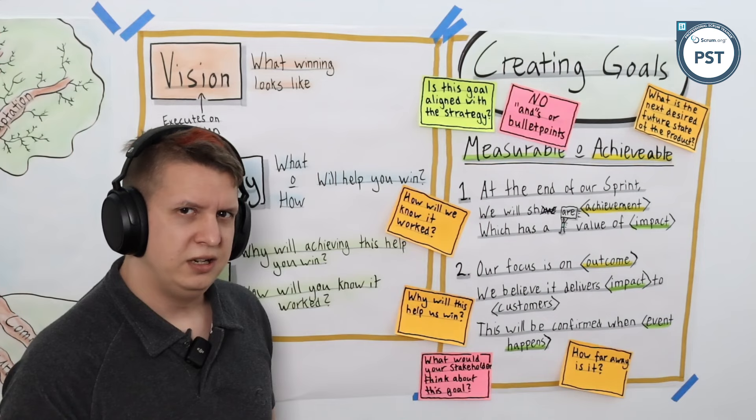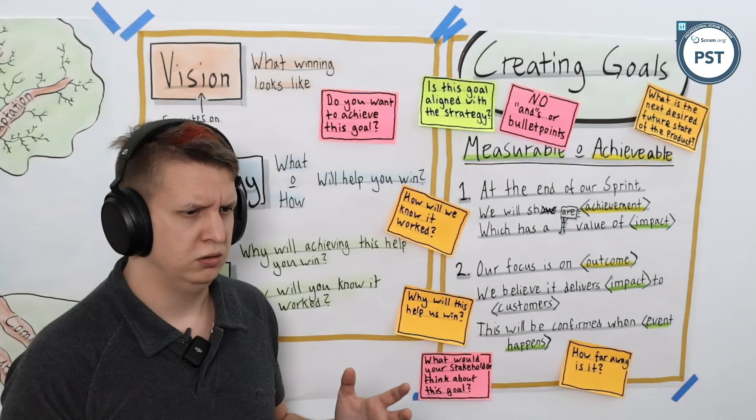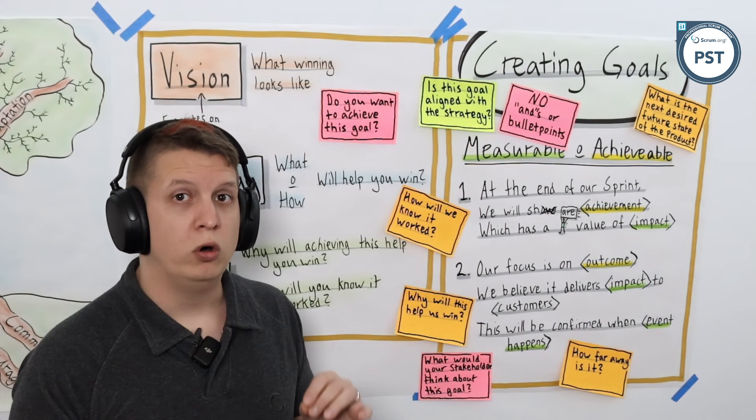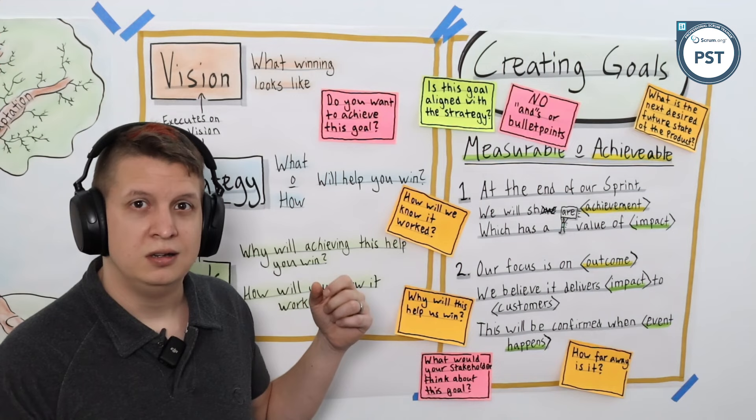And finally, this is one I don't hear mentioned enough: do you want to achieve the goal? If you've just made a sprint goal or product goal that you don't care about, why would you do any work towards it? Make sure that when you're crafting goals, they are goals you care about, goals you want to achieve. Because if you don't, why would you get out of bed in the morning? Make goals you want to achieve that execute on a strategy and get you closer to achieving your vision.